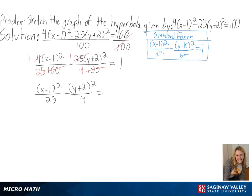To start plotting our graph, we need to find the center of the hyperbola. We can see here that h is equal to 1 and k is equal to negative 2, so our center will be 1 negative 2.